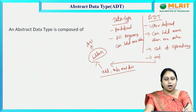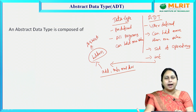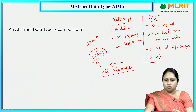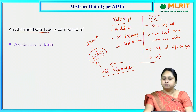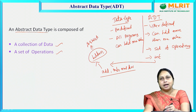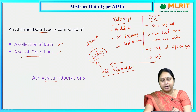That hiding of the implementation part is what makes it abstract. In our data structures, we use this abstract data type — meaning we hide the implementation part from the user. An abstract data type is composed of a collection of data followed by a set of operations. In short, we can represent ADT as: Data + Operations.